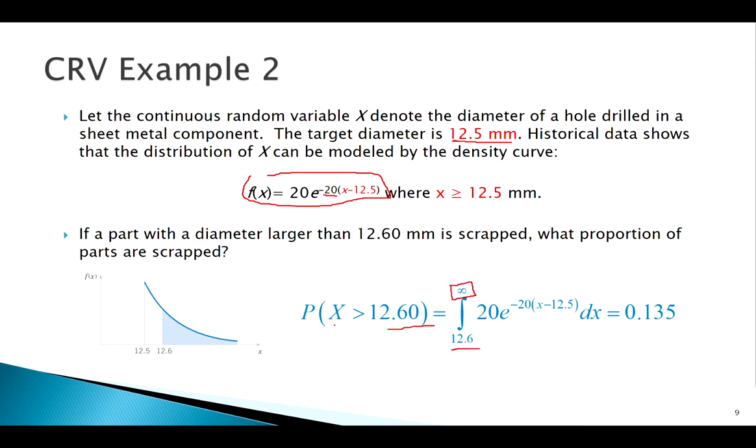We're looking for X greater than 12.6, so since it's greater than, we're going to go from 12.6 and our upper bound here is infinity. I put in that PDF dx, if we do the math we get this. Turns out this is actually the exponential distribution. It's a greater than problem, so we integrate from that number to the upper bound, which here is infinity.